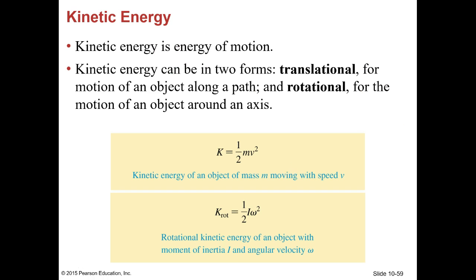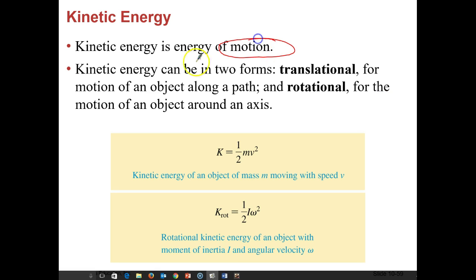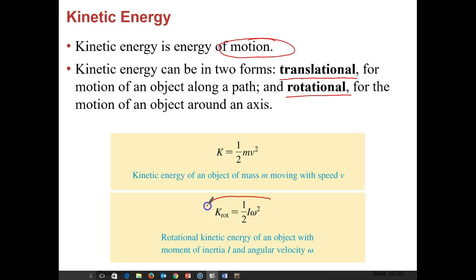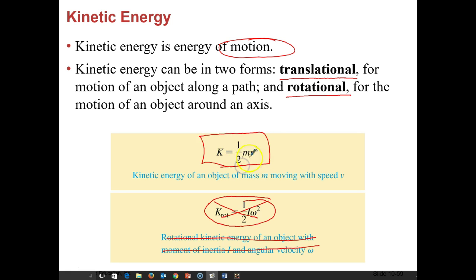Kinetic energy is the energy of motion. If something is moving, it has kinetic energy. It can either be moving in a straight line — translating from place to place — or it can be rotating, spinning in a circle. We're not going to worry too much about the rotational part right now; we'll deal with translational motion. The kinetic energy of an object is one-half of its mass times its velocity squared.